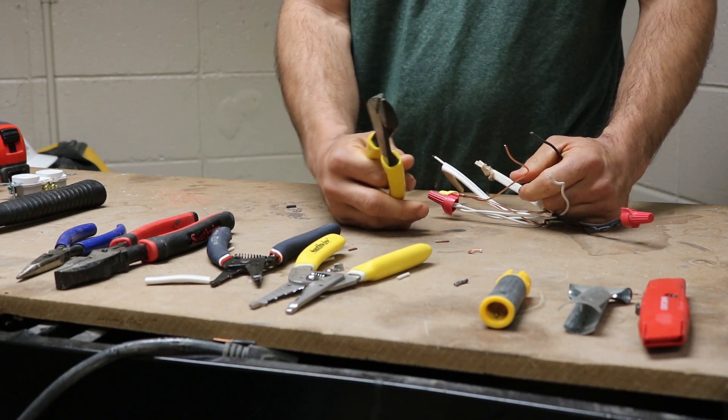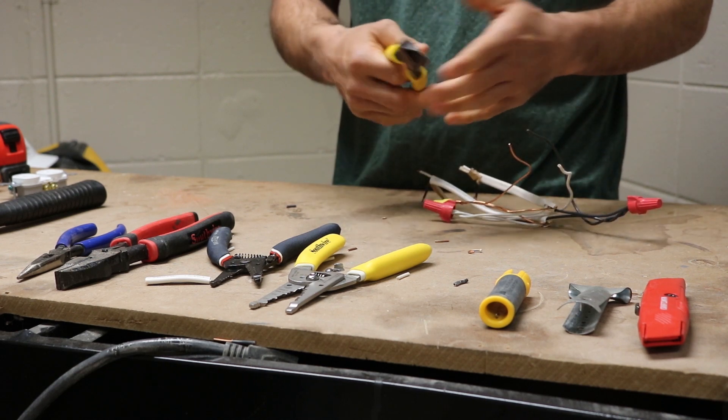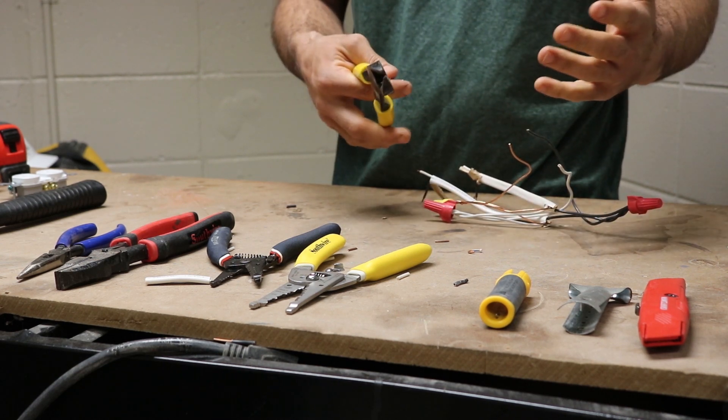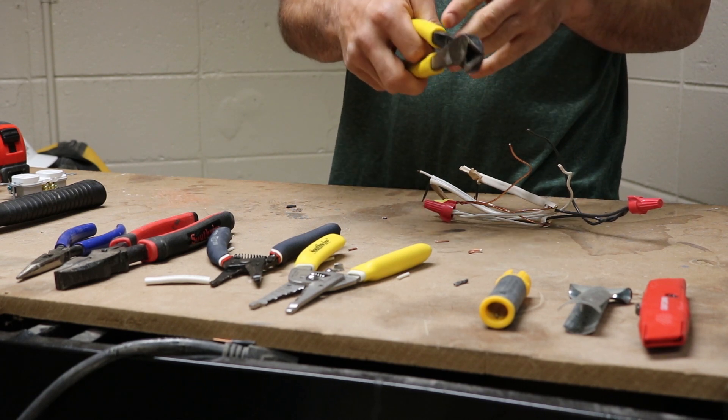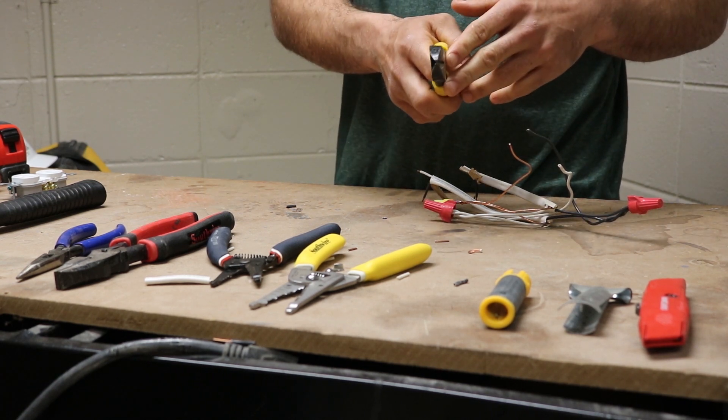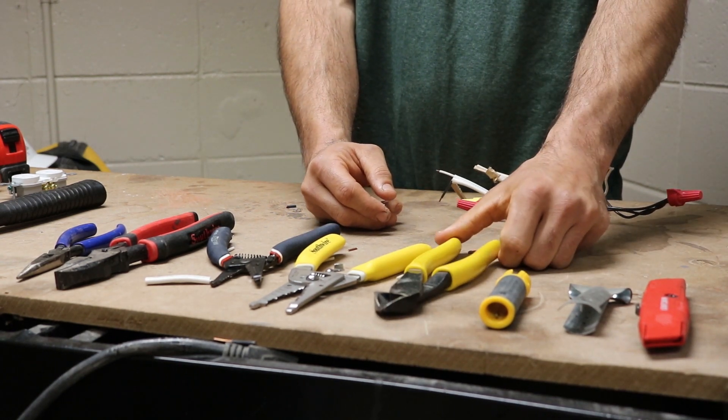They are also great for pulling staples out. If you drive a staple and need to move it, or if you need to take a box off the wall, you can grab the nail of the box or grab the staple and pry against the two-by. So that's another very handy tool.